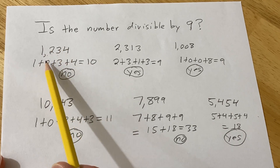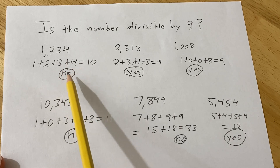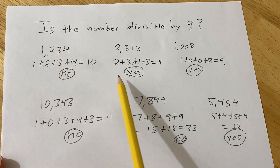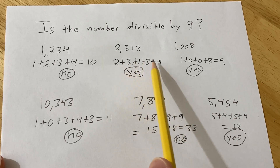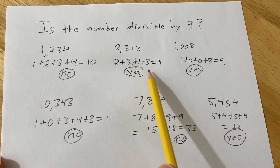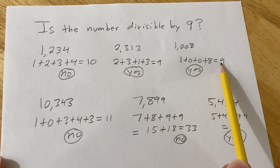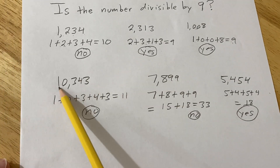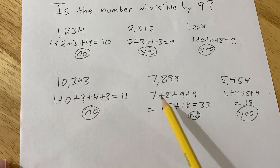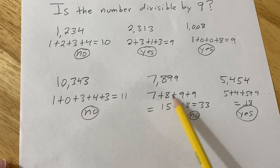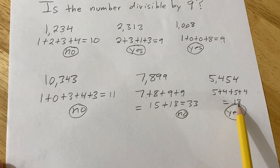Reviewing our examples: 1+2+3+4 equals 10 — not divisible by 9, so no. 2+3+1+3 equals 9 — divisible by 9, so yes. 1+0+0+8 equals 9 — divisible by 9, so yes. 1+0+3+4+3 equals 11 — not divisible by 9, so no. 7+8+9+9 equals 33 — not divisible by 9, so no. 5+4+5+4 equals 18 — divisible by 9, so yes.